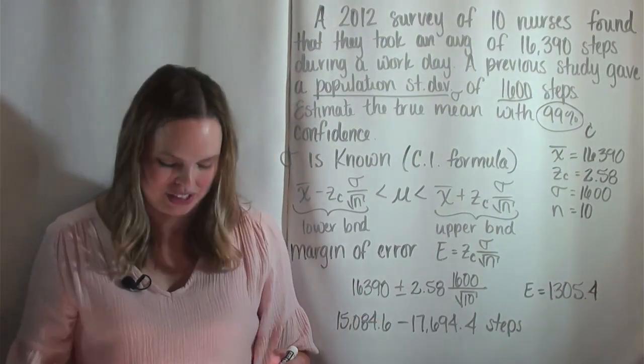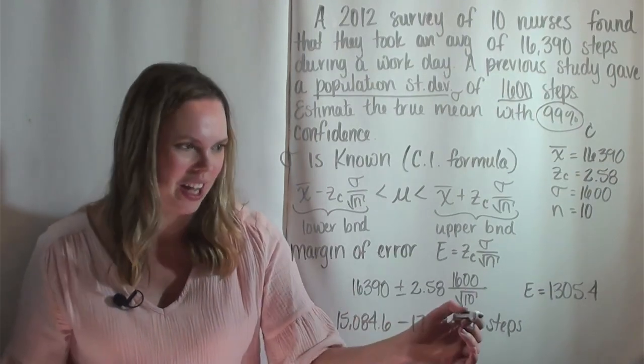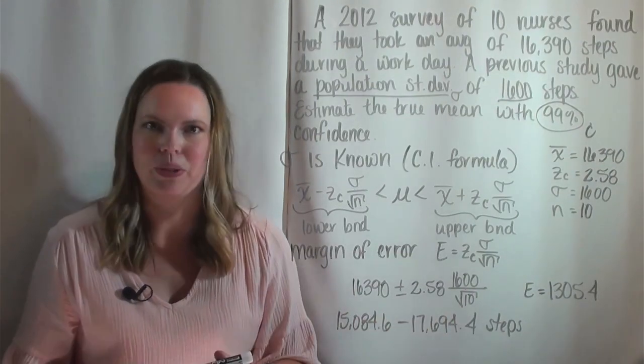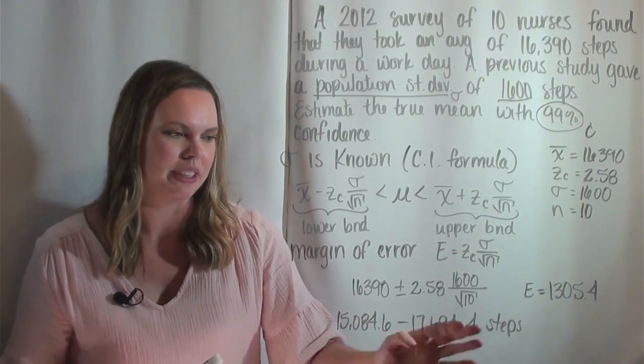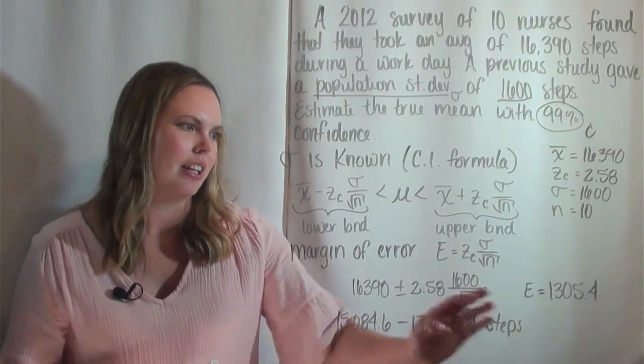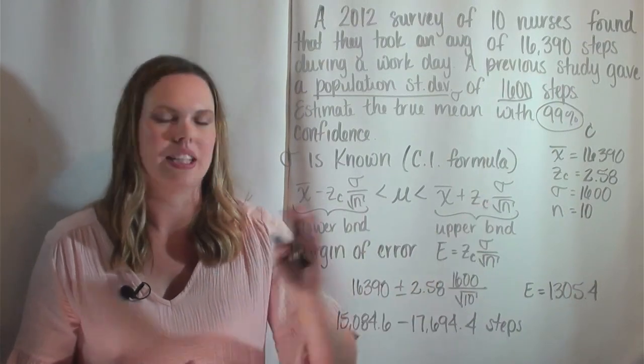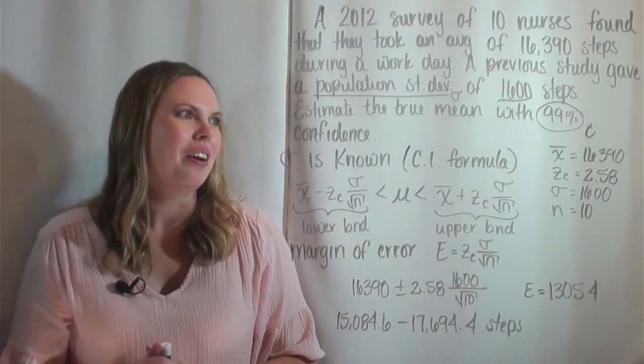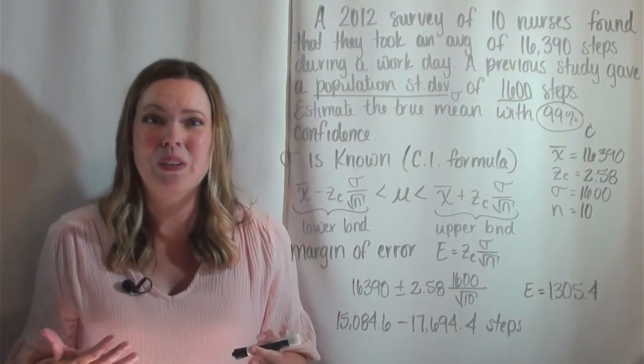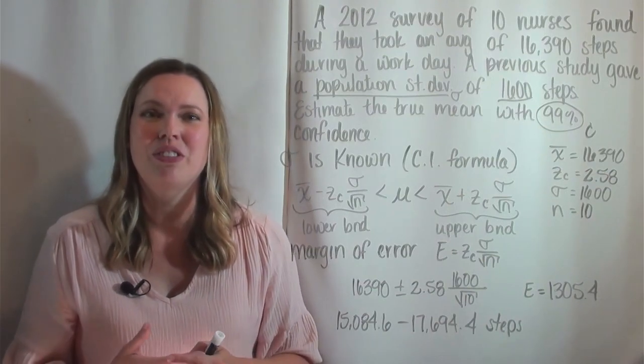So there's your confidence interval, lower boundary to upper boundary. I just used a hyphen in between to say that the mu is within this interval, and then your margin of error. That's what you add and subtract to each side there. So hopefully that was helpful to you and you can construct a confidence interval for a true mean.